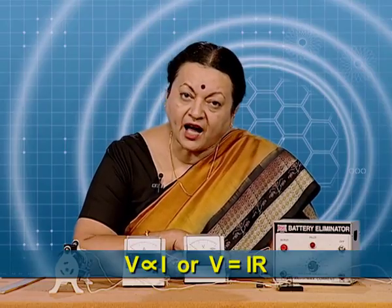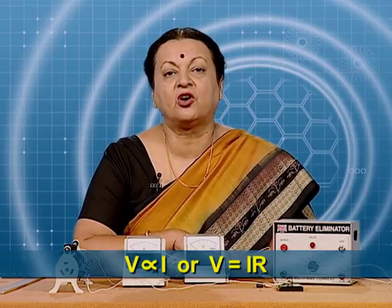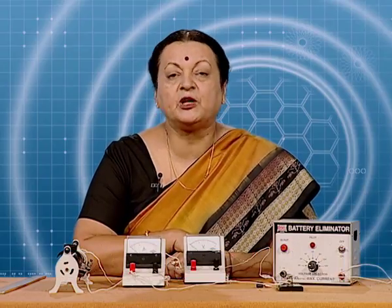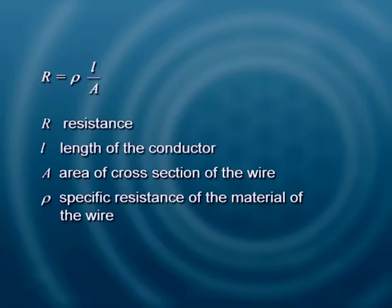This R becomes the resistance of the conductor, and it is primarily what we are going to find here. We also know that for a conductor like a wire, the resistance depends upon the material — its specific resistance — the length of the wire, and the area of cross section A.